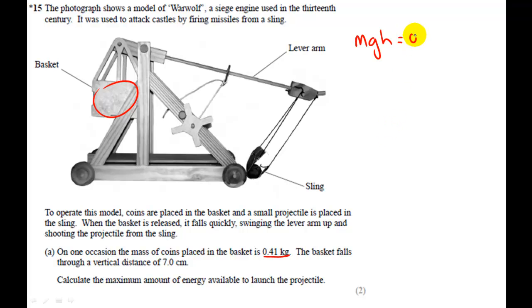Substituting the numbers in, the mass is 0.41 kilograms. Gravity, 9.81. And the height, can't use 7 centimeters, it has to be an SI unit, so it's going to be 0.07 meters.